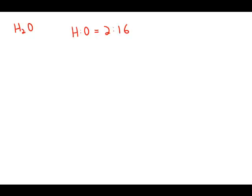Water consists of hydrogen and oxygen, H2O, and the approximate ratio by mass of hydrogen to oxygen is 2 to 16.